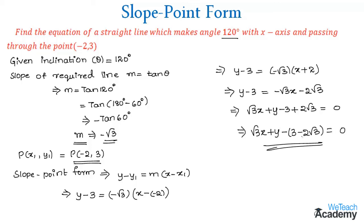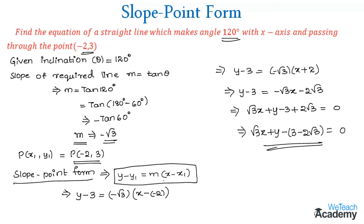This is the equation of the straight line which makes the given angle and passes through the given point. Note that the equation of a line with slope m and containing a point is given by y minus y1 is equal to m into x minus x1. This is about slope-point form and in our next video we are going to discuss two-point form. Stay tuned. Thanks for watching. Have a nice day.